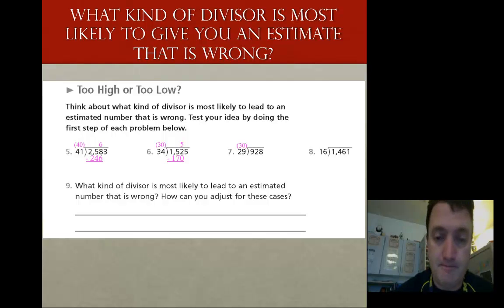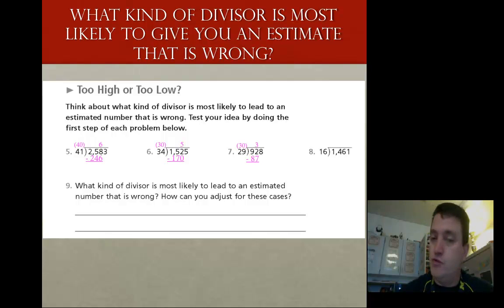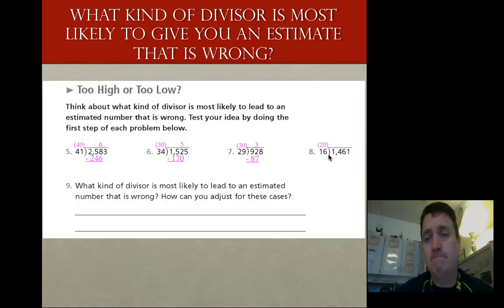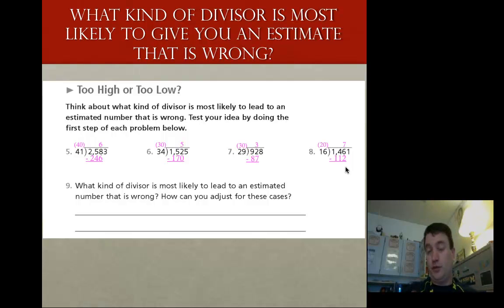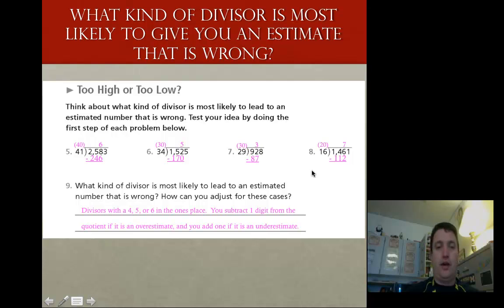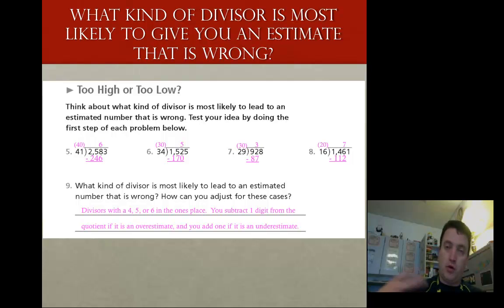Let's take a look at the next one. I round up to 30, times 3, do my original number, I get 87 — no issues with that. For the last one, 16 — I round it up to 20, multiply that out 7 times, I get 112. When I subtract, this is going to be too small because there are definitely more 16s in there. So what kind of divisor is going to lead to estimation problems? The first one that was wrong ended in 5. The others that gave me problems are 4 and 6. So divisors with a 4, 5, or 6 in the ones place are the ones that will give the most trouble. I can subtract one digit from the quotient if I overestimate, and add one if I underestimate.